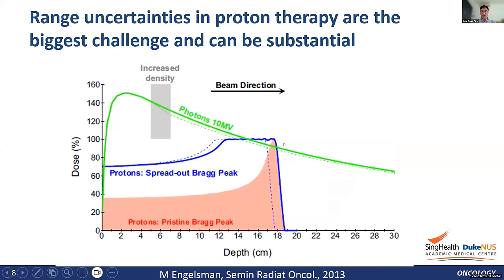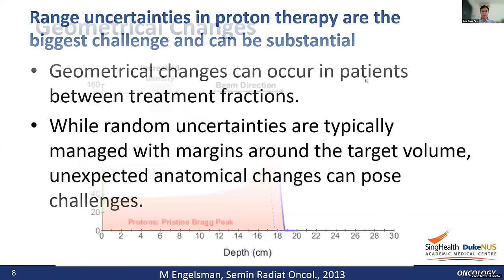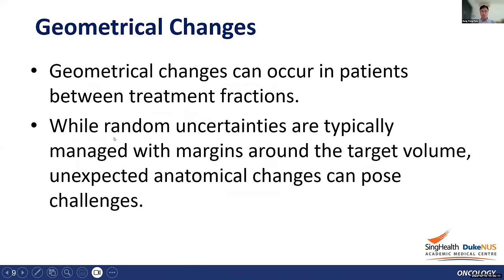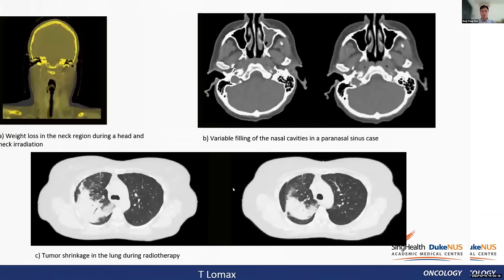However, range uncertainties in proton therapy are the biggest challenge. For example, a 2–3% increase in density in a photon beam may slightly reduce intensity, but the same scenario in proton therapy could cause you to miss the target entirely. Geometrical changes occur between treatment fractions — while random uncertainties are managed with margins around the target volume, unexpected anatomical changes can pose significant challenges.